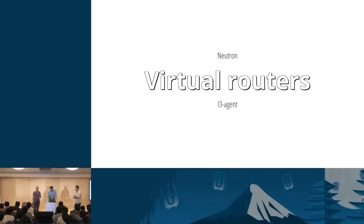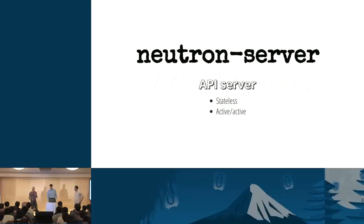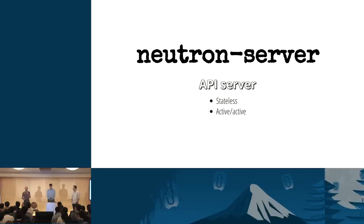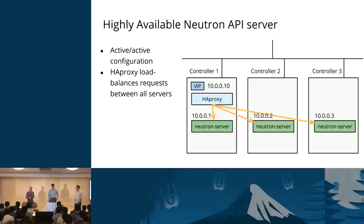This is probably the simplest area to talk about: HA of Neutron Server. Not much has happened in development recently here. The essential thing is that as long as you have a highly available database, the server is stateless — so you can run as many as you want, active-active, without doing anything special, other than ensuring that the client has a reasonable way of reaching any of the server backends. Typically, you'll use something like HAProxy for load balancing.